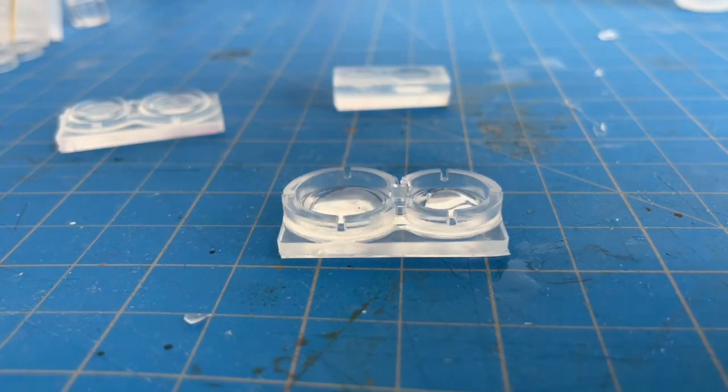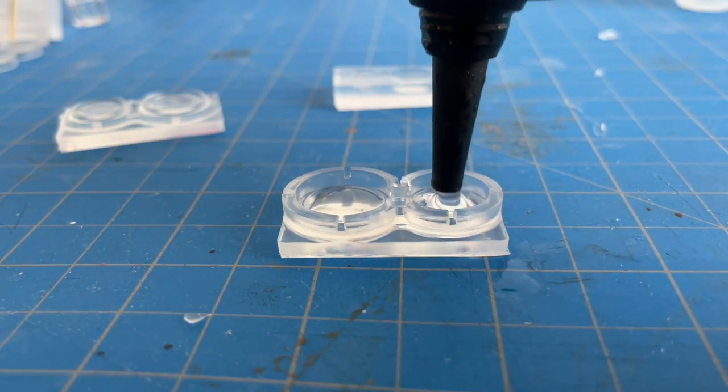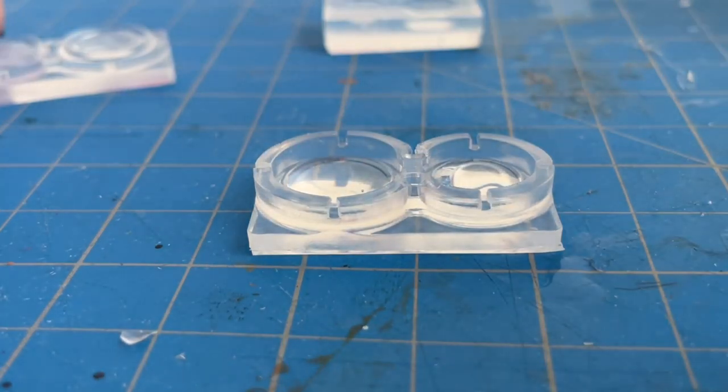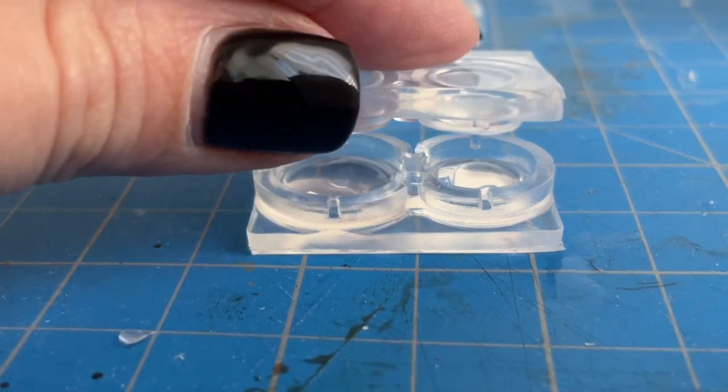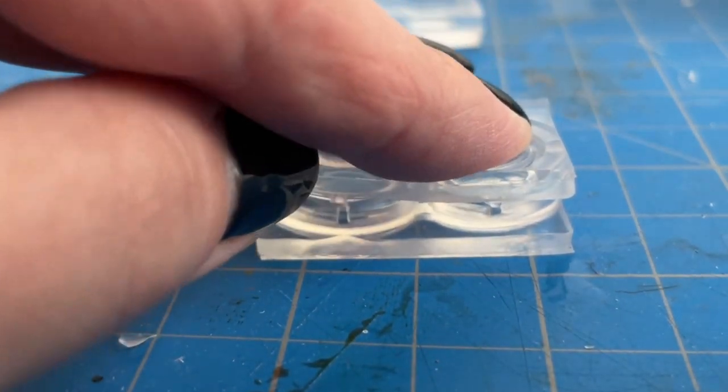And now I'm going to make the lids for the hexagon jars. And just like the bottles the lid mold is in two pieces so I'm not sure how much resin I need for this so I'm gonna guess for this first one.